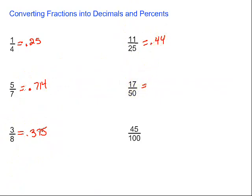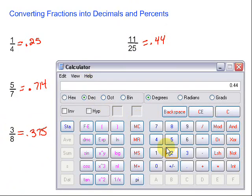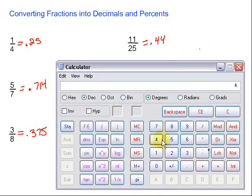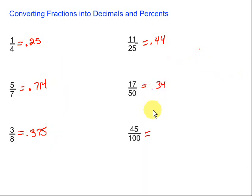Here we have another one. Seventeen over fifty. Seventeen divided by fifty gives us .34. And last but not least, we've got forty-five divided by a hundred. That gives us .45.